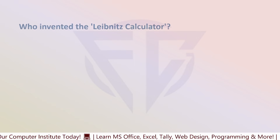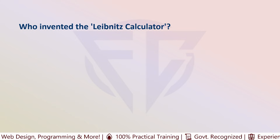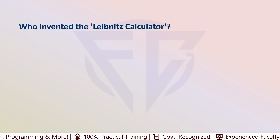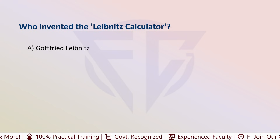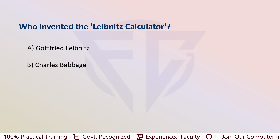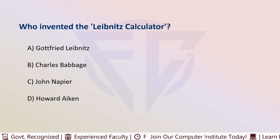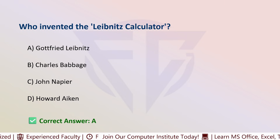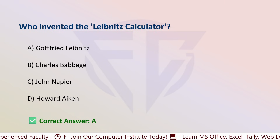The next question is: who invented the Leibniz calculator? Options are: A) Gottfried Leibniz, B) Charles Babbage, C) John Napier, and D) Howard Aiken. The correct answer is A, that is Gottfried Leibniz.